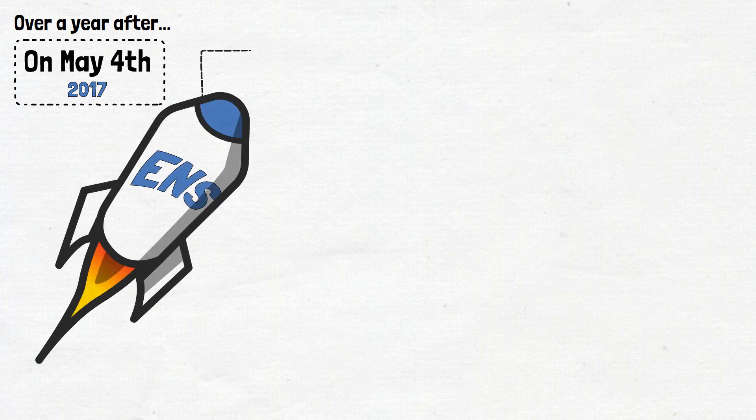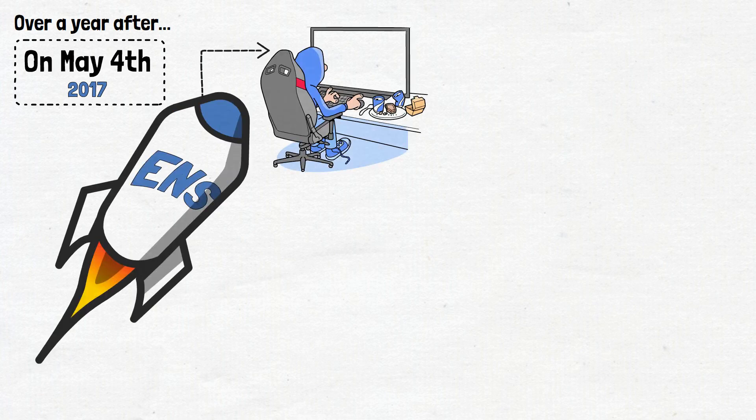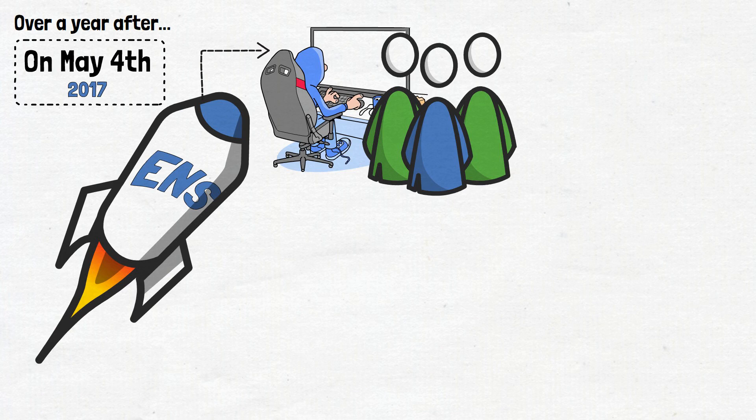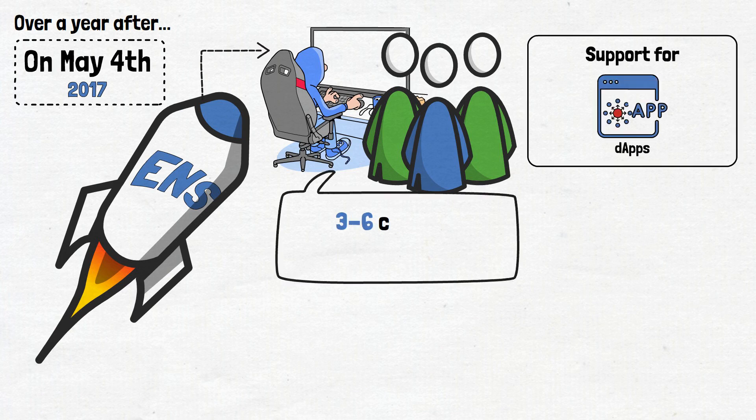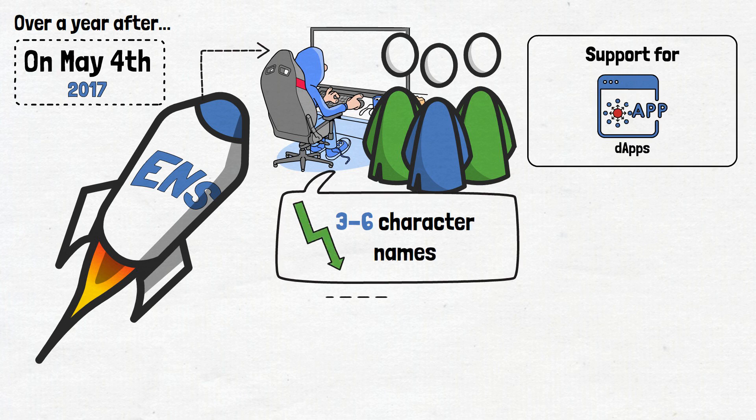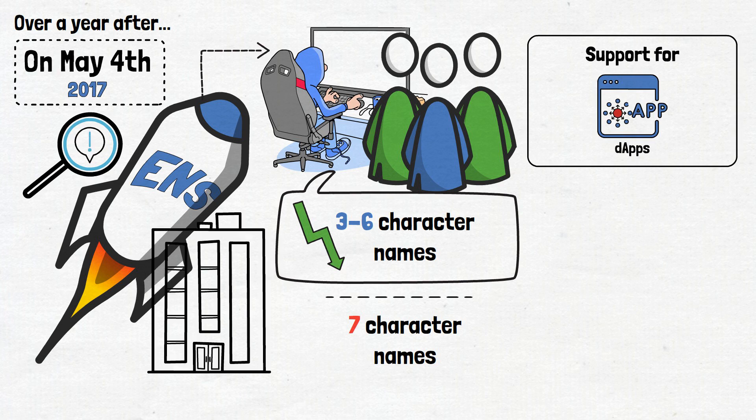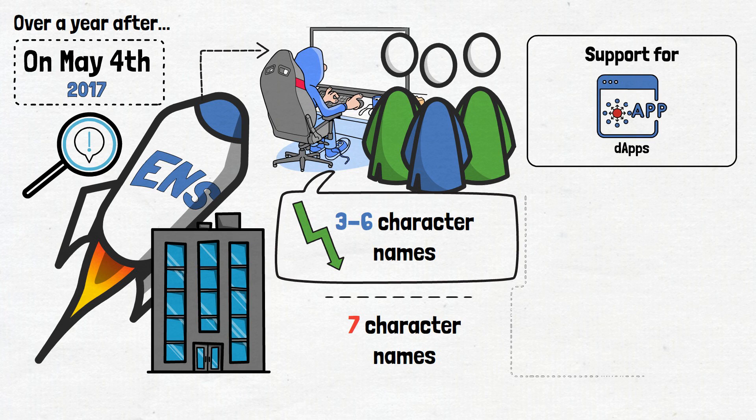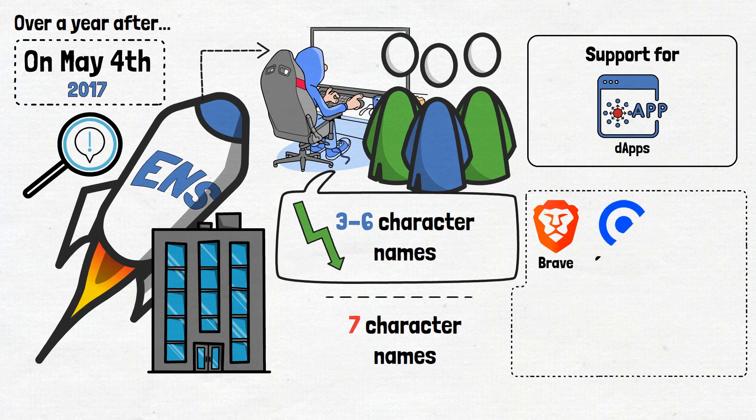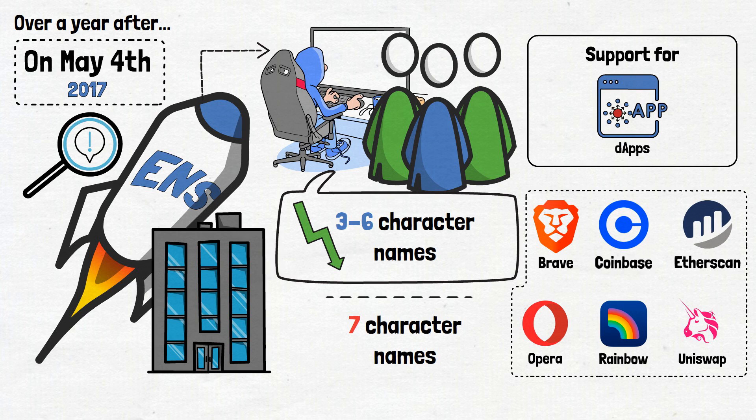With the ENS proposal, Johnson hoped to create a platform that would introduce a resolution to offering human-readable names for crypto addresses and resource identifiers on the blockchain. Over a year after the proposal, on May 4th of 2017, the project was finally launched. However, the development did not stop there. The team behind ENS continued to work and introduced support for dApps. Moreover, it started offering 3-6 character names, a significant reduction from its initially offered 7-character domains. The ENS significance can be noticed by looking at the companies that have integrated this technology. ENS is widely used on platforms like Brave, Coinbase, Etherscan, Opera, Rainbow, and Uniswap. Impressive, right?